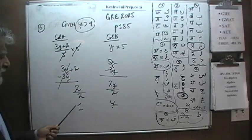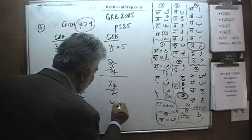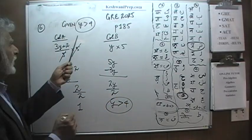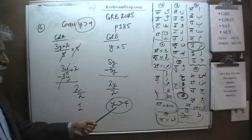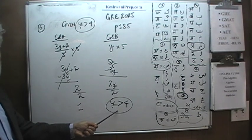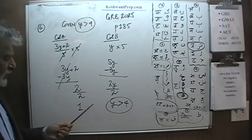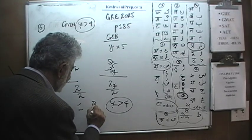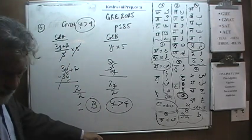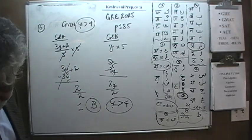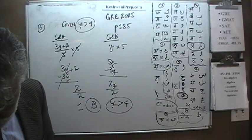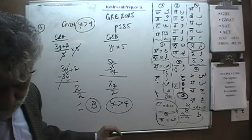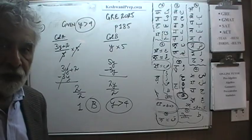Which quantity is bigger — 1 versus y — where we are already told that y is more than 4? So obviously the quantity that is more than 4 is bigger than 1. The answer is B. That was it. I'll see you tomorrow, okay?